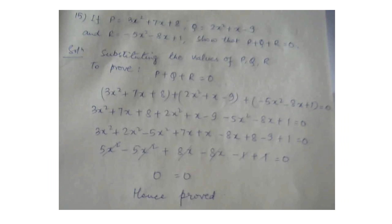Question number 15: if p is equal to 3x square plus 7x plus 8, q is equal to 2x square plus x minus 9, and r is equal to minus 5x square minus 8x plus 1, show that p plus q plus r is equal to 0. This is of the same pattern — you put the values of p, q, and r, solve them, and finally you will get the answer as 0. Then you can say hence the solution is proved.